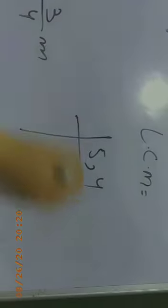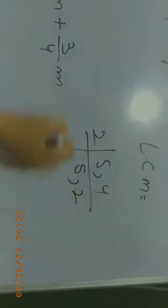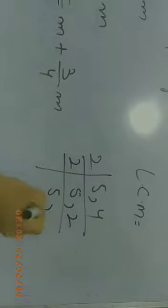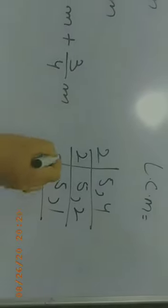So we need to find the LCM. Five and four. Two twos are four, two ones are two, five ones are five, five twos are ten, and ten twos are twenty. So the LCM is twenty.